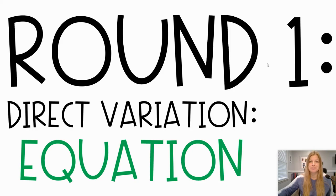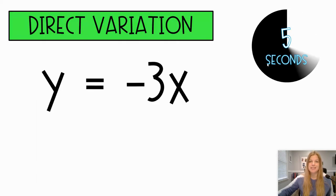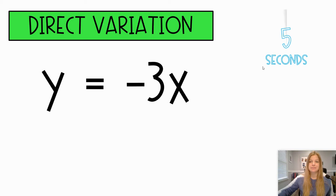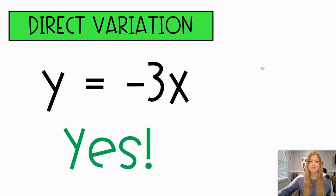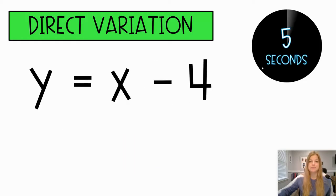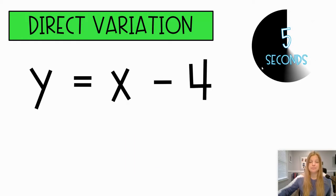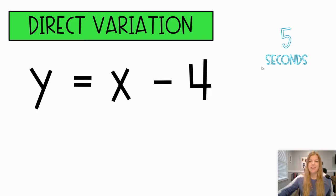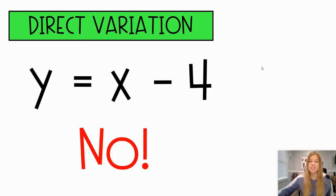Are you ready? We're going to have four problems. Here is the first problem — is that a direct variation? The answer is yes, it's certainly in the form of y equals kx; my k is negative 3. Next one.